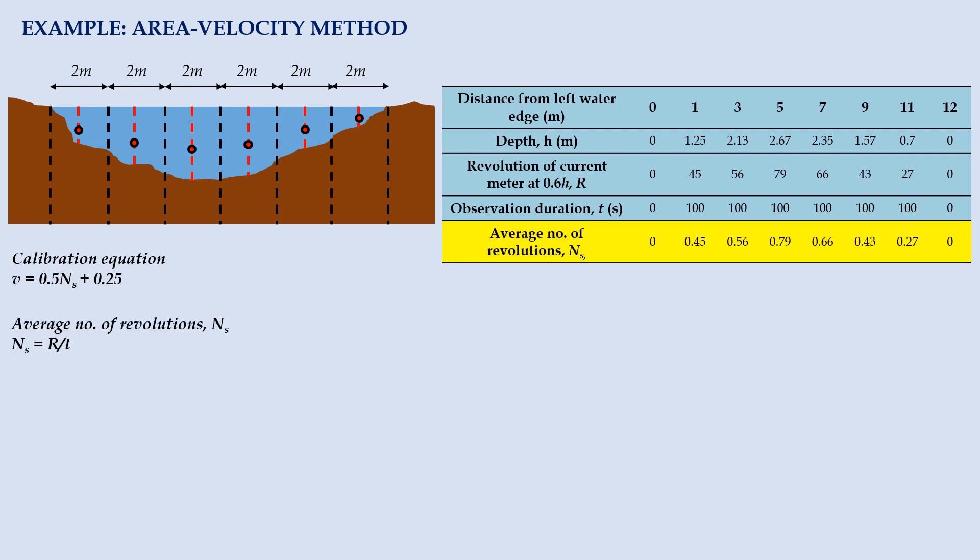First, from the total of revolutions obtained throughout the observation duration, we calculate the number of revolutions per second. Then, we apply calibration equation and convert it into equivalent flow velocity.